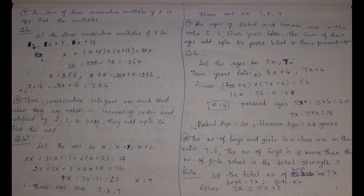Seventh problem: the sum of 3 consecutive multiples of 8 is 888. Find the multiples. Let the multiples of 8 be x, x+8, x+16. Summing and solving: x = 288, so x+8 = 296, x+16 = 304. The three consecutive multiples of 8 are 288, 296, and 304.